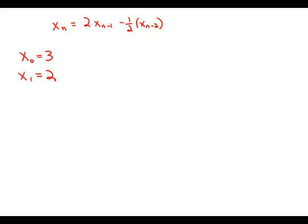In a certain sequence, the term x sub n is given by the formula, and we have this complicated formula, for all n greater than or equal to 2. If x sub 0 equals 3 and x sub 1 equals 2, what is the value of x sub 3?